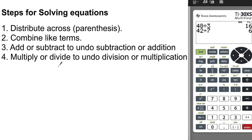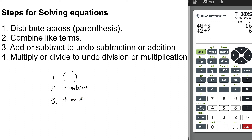Here are the four general steps for solving equations. Step 1: distribute across parentheses. Step 2: combine like terms — if you have the same terms on one side, add or subtract to combine them. Step 3: add or subtract to undo subtraction or addition. Step 4: multiply or divide to undo multiplication or division. This is the general process; there are exceptions, but this covers the basics.